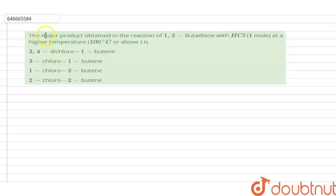Hello everyone, let's start the question. The question says that the major product obtained in the reaction of 1,3-butadiene with HCl (1 mole) at a higher temperature, 100 degree Celsius or above, is: